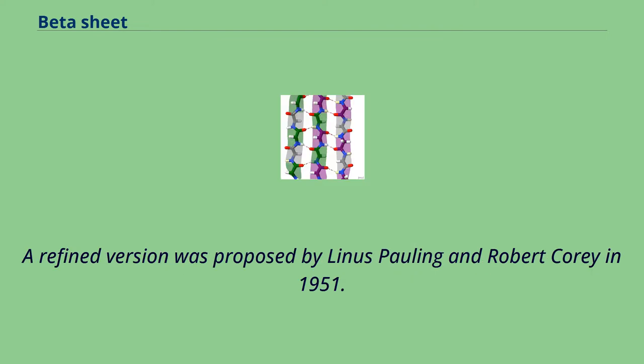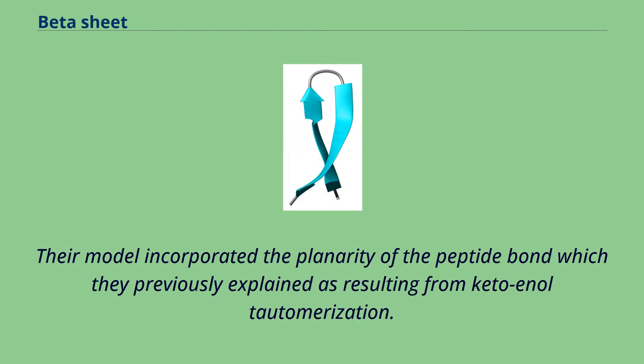A refined version was proposed by Linus Pauling and Robert Corey in 1951. Their model incorporated the planarity of the peptide bond which they previously explained as resulting from keto-enol tautomerization.